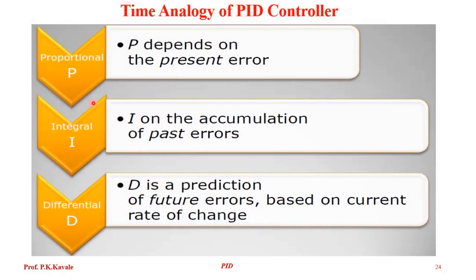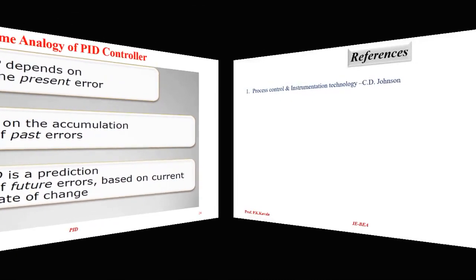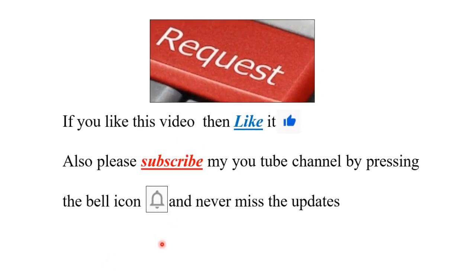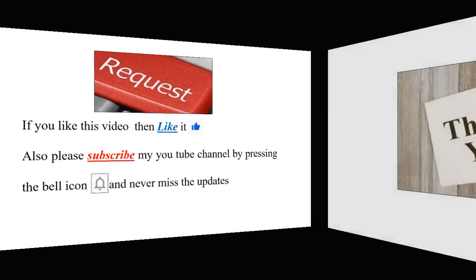In a nutshell: P (proportional) only looks at the present error. I (integral) looks at the past history — it accumulates the value, the area under the curve. D (differential) is the prediction of future error based on current changes. So to summarize: P is present, I is past, D is future. If you like this video, please like it, subscribe to my YouTube channel by pressing the bell icon, and never miss an update. Thank you.